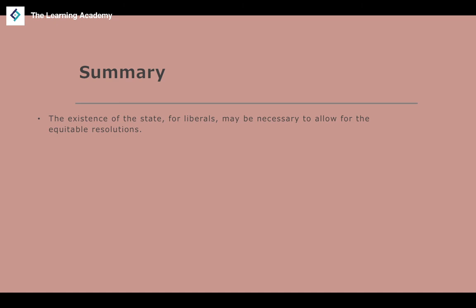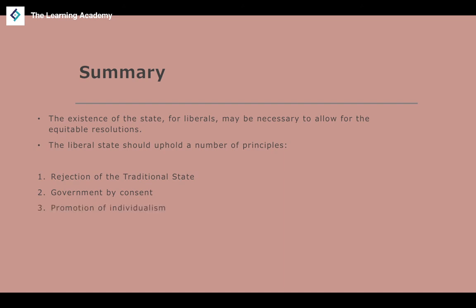In summary, this video has explained what the liberal state is. We've looked at why the state may be necessary for liberals — to allow equitable resolution of disputes. We've examined the key principles that ought to be upheld: rejection of the traditional monarchical state, government by consent rather than divine right, promotion of individualism, promotion of tolerance, meritocracy, equality of opportunity, and justice.